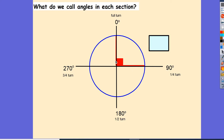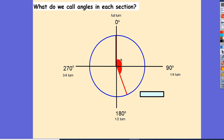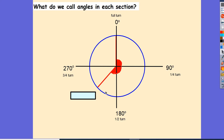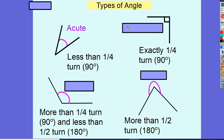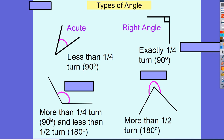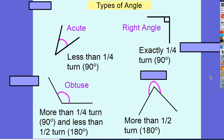If I've turned exactly a quarter turn — 90 degrees — usually shown with a square, we call that a right angle. If I turn more than 90 but less than 180 degrees, we call that an obtuse angle. And if I turn more than 180 degrees, we call that a reflex angle. So: acute is less than 90, right angle is exactly 90, obtuse is between 90 and 180, and reflex is more than 180.